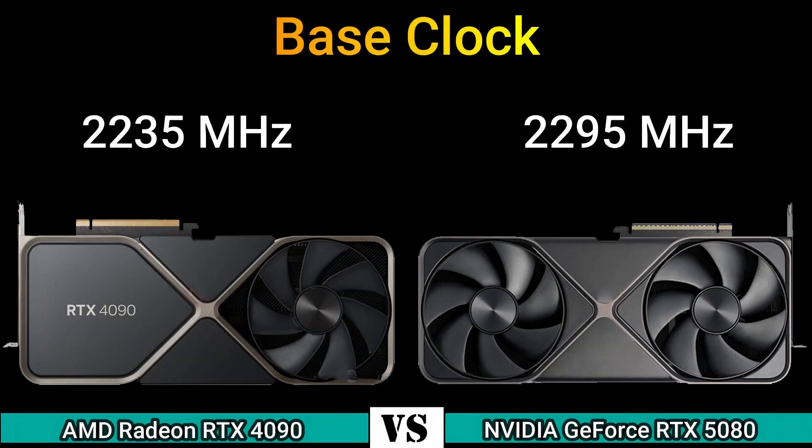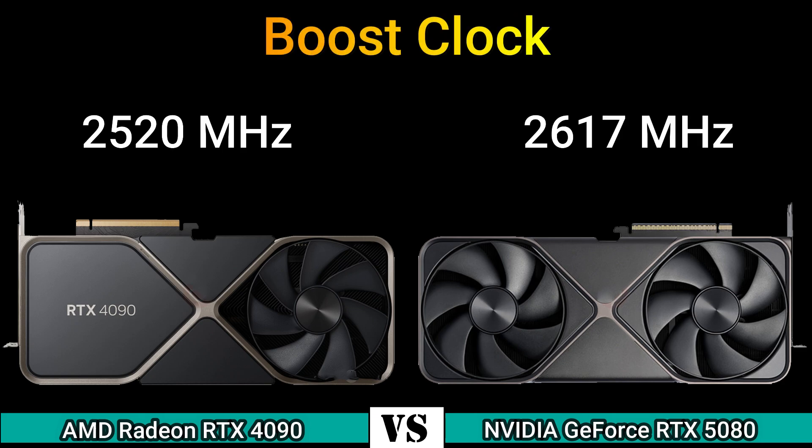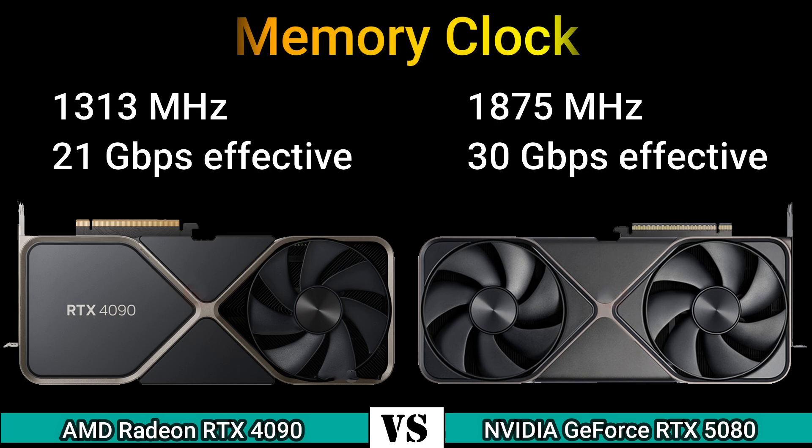Base clock 2235 MHz and 2295 MHz. Boost clock 2520 MHz and 2670 MHz. Memory clock 1313 MHz 21 Gbps effective and 1875 MHz 13 Gbps effective.